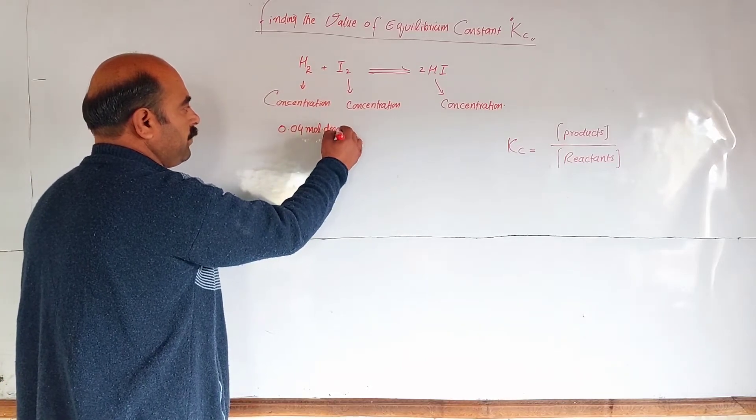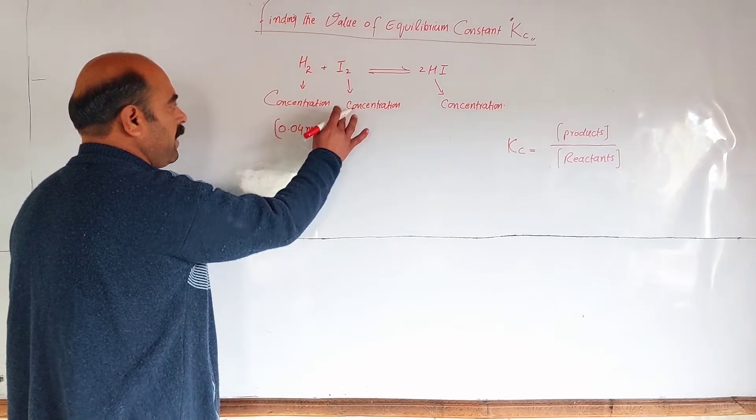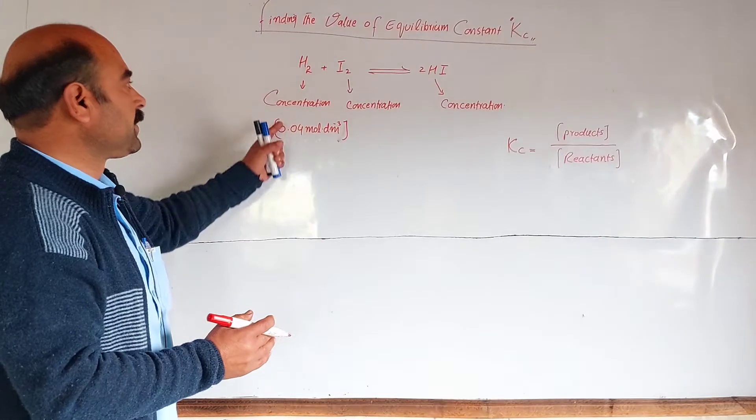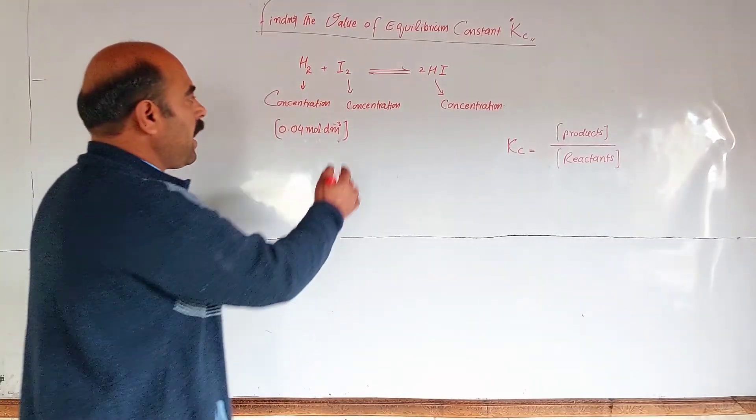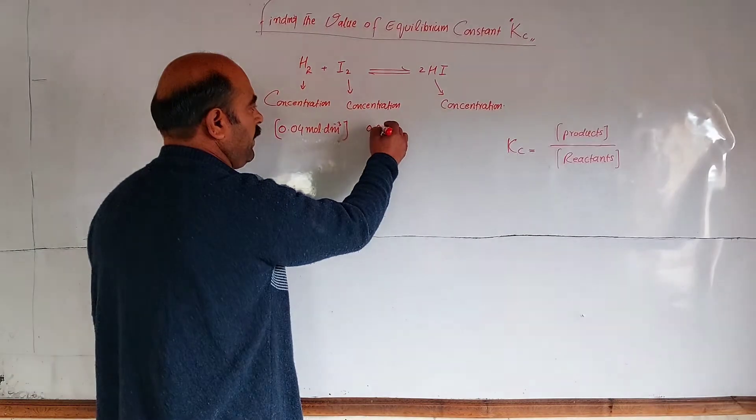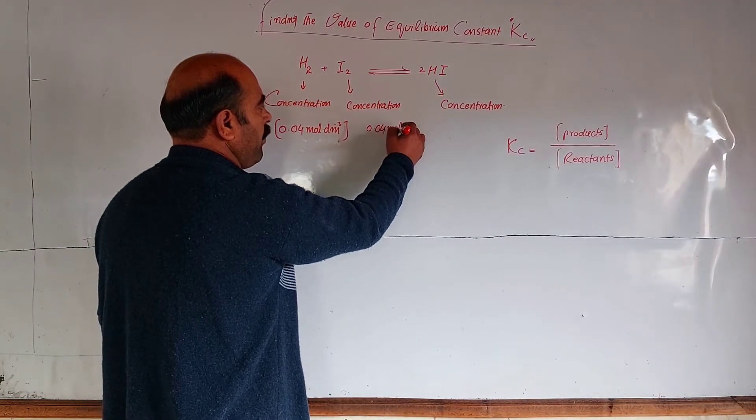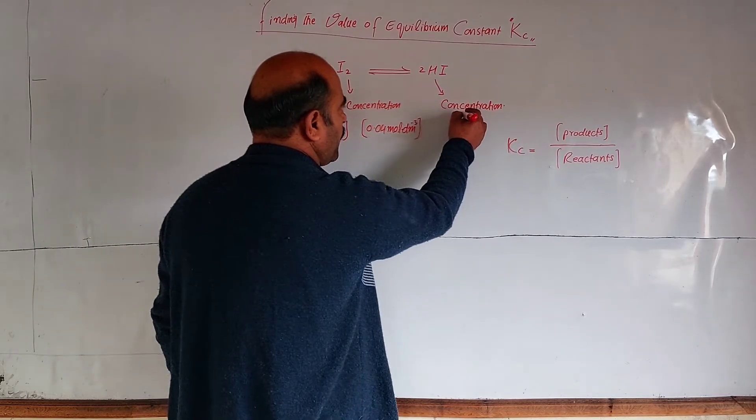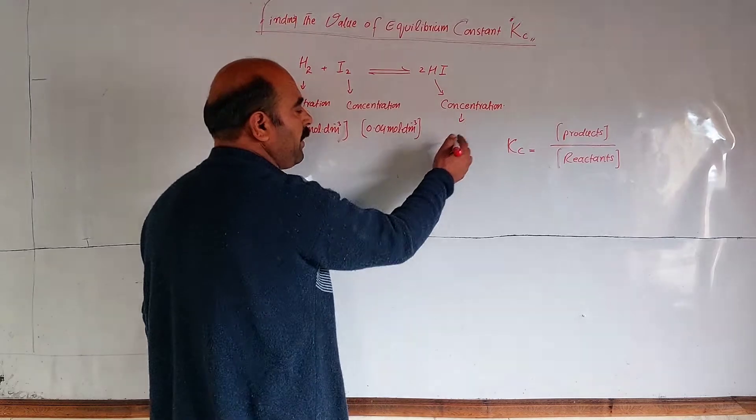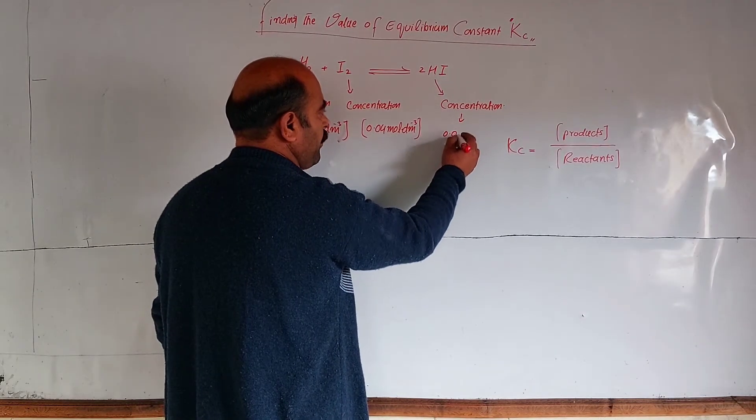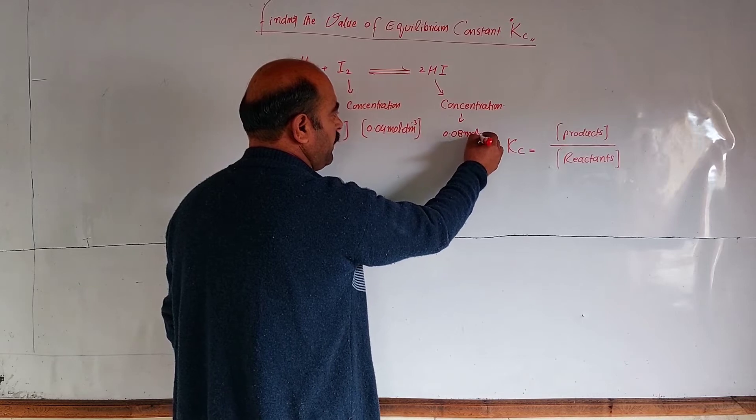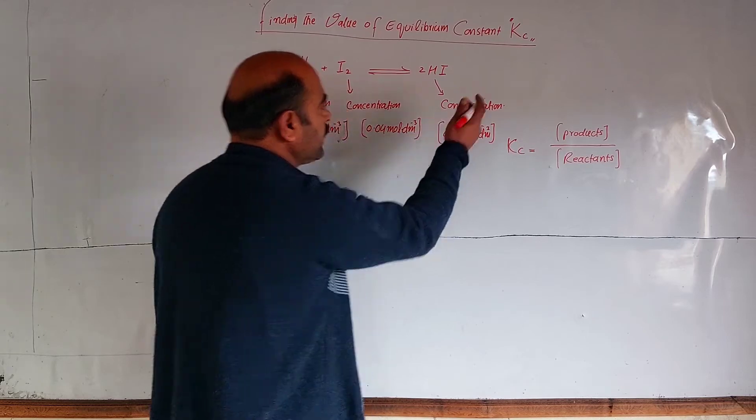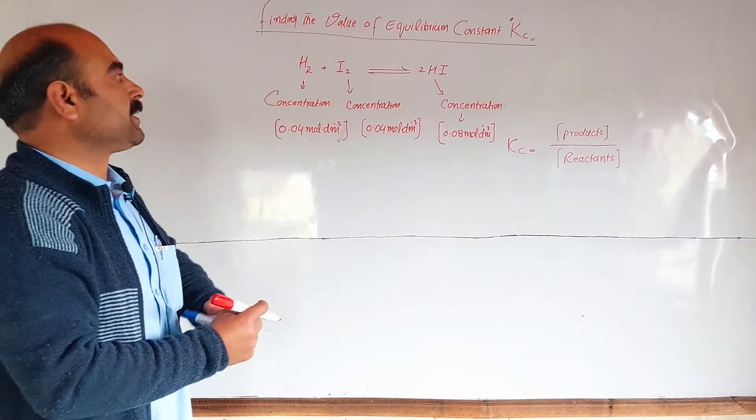Hydrogen concentration is 0.04 mole per decimeter cubed. This is the concentration of hydrogen in the equilibrium mixture. Iodine concentration is 0.054 mole per decimeter cubed. Hydrogen iodide concentration in equilibrium mixture is 0.08 mole per decimeter cubed. These concentrations are given when the system is at equilibrium state.